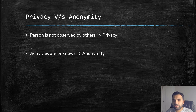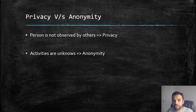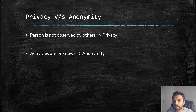Anonymity is the complete opposite. People would know that some activity is being done, but they don't know who is doing it. For example, if you are wearing a mask and washing your car in the garage, people would know that somebody is washing the car, but they don't know who is washing the car — that's anonymity. That's the basic difference between privacy and anonymity.